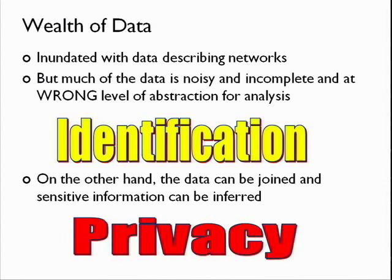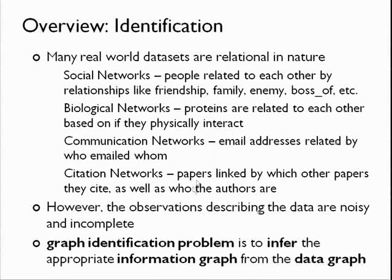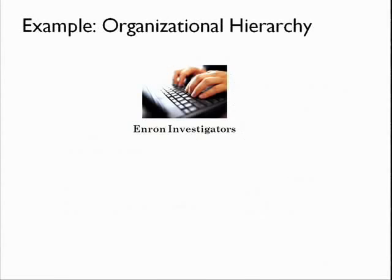I'm going to start off talking about identification. There are a lot of real-world data sets that are inherently relational — social networks, biological networks, communication networks, citation networks, and also query logs with relationships between query logs, click logs, and that kind of behavior. However, in many cases the observations are noisy, and graph identification is a problem of trying to infer the correct graph that you want to do your science on from this what I'm calling a data graph.